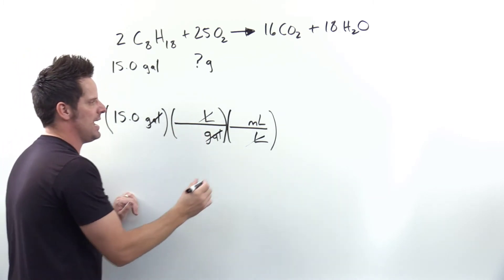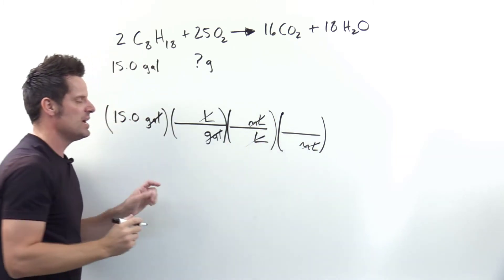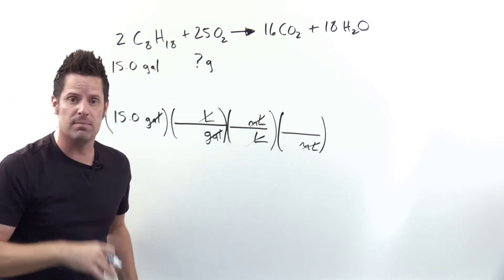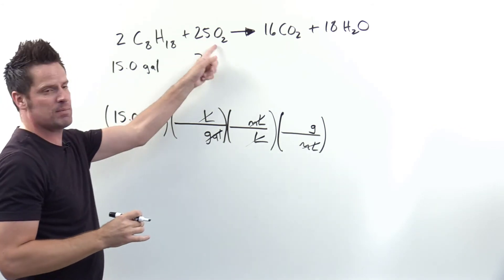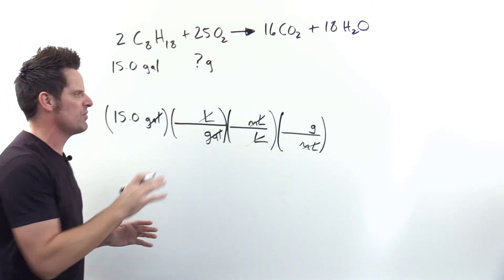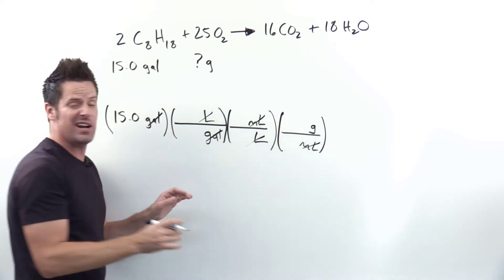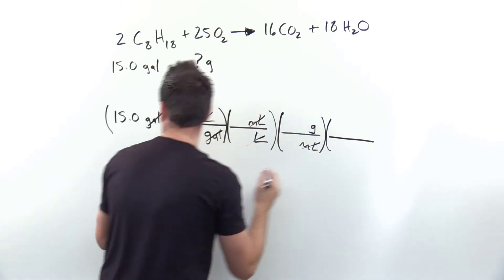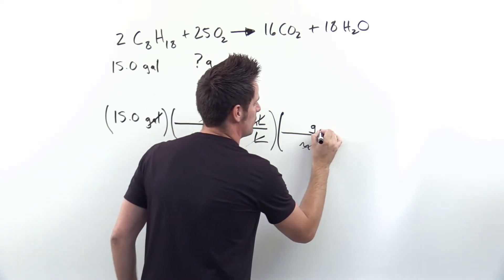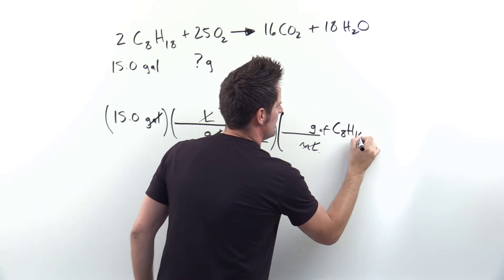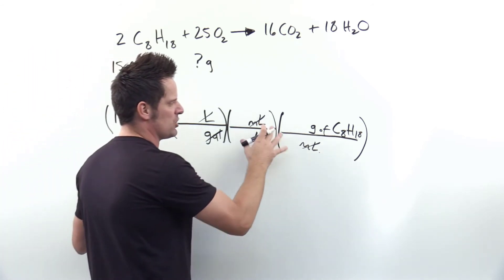I put grams of octane — specifically C8H18 — in the numerator. It is important to write it as grams of octane, not grams of O2, because the density given in this question is grams of octane per milliliter. There is a certain number of grams of octane per milliliter of octane. In the next set of parentheses, I put grams of octane in the denominator. Can grams of octane directly touch grams of O2? No — I have to go through moles.